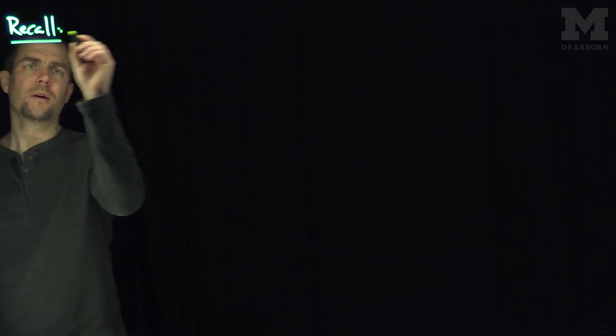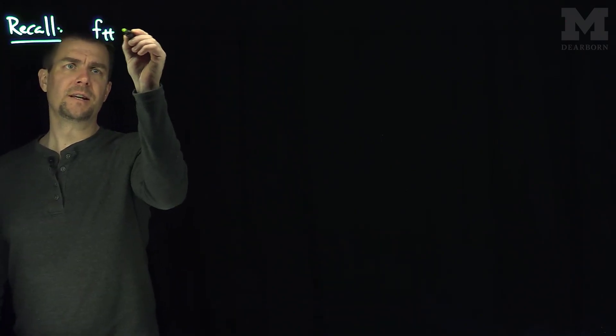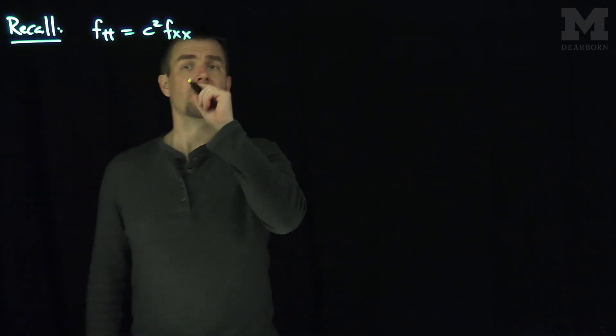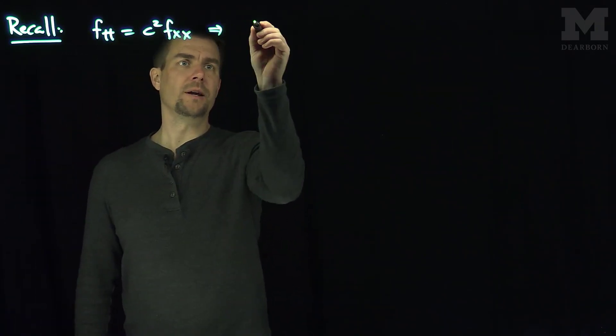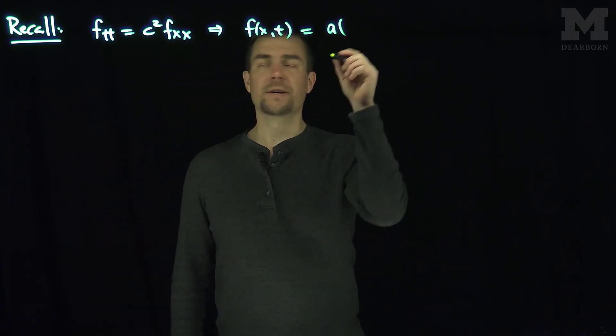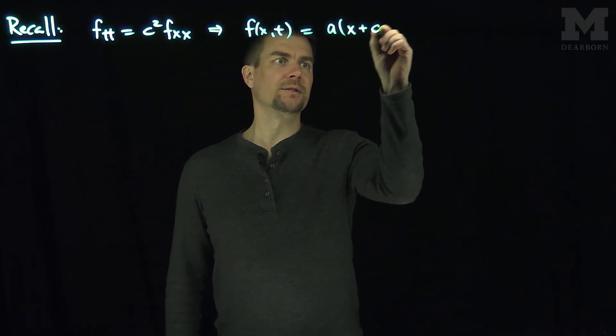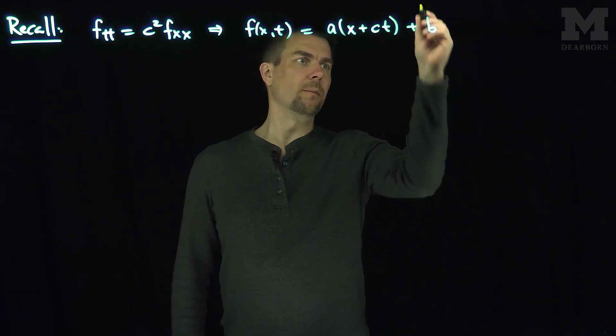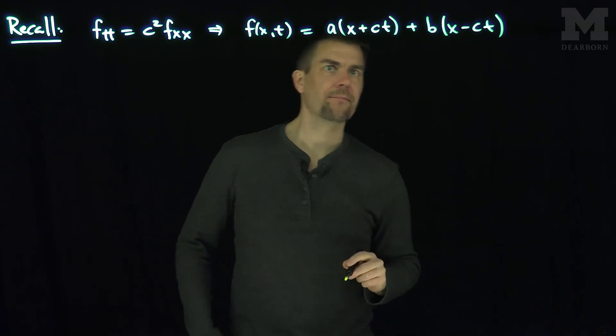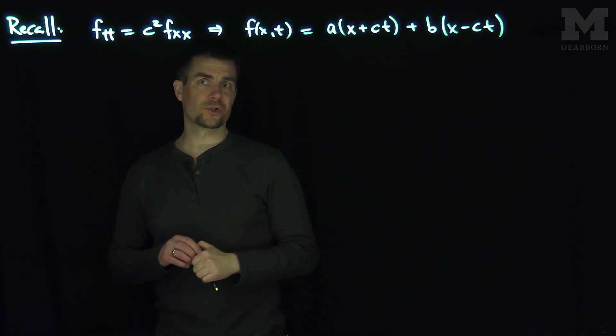So if you recall, if we had f_tt equals c squared f_xx, then the general solution to this would be f(x,t) is going to be some function a(x + ct) plus a function b(x - ct). That was the general solution to the one dimensional wave equation.